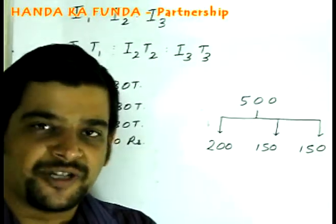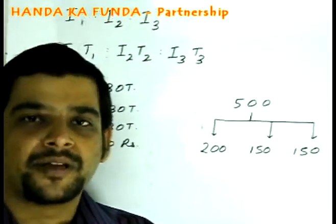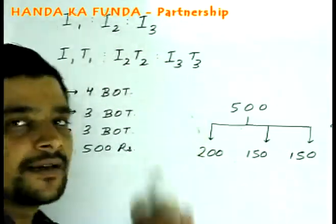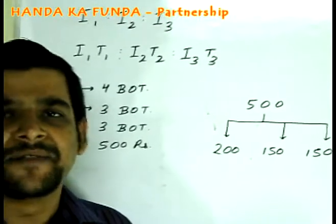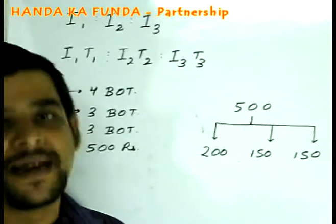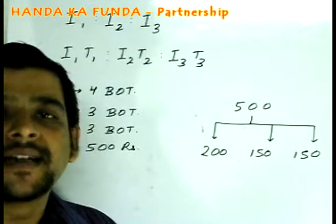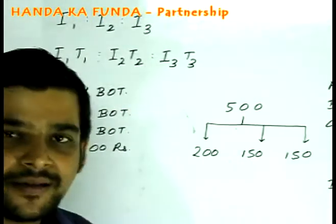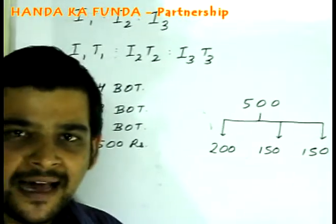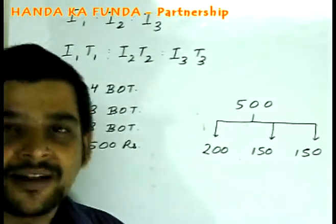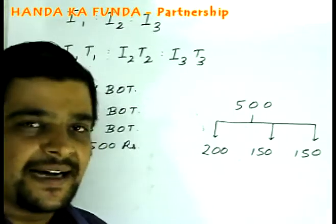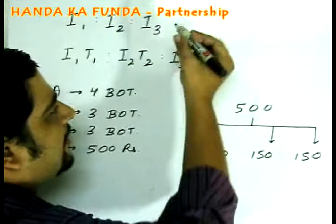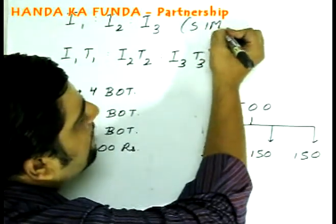There are two kinds of partnerships which are in focus during the exams. One is the simple partnership, where the only differentiating factor between people is the amount of money that they invest. If three people A, B, and C invest I1, I2, and I3 rupees, then the profits, products, or losses will be divided in the ratio of I1 : I2 : I3. This is the case of simple partnership.